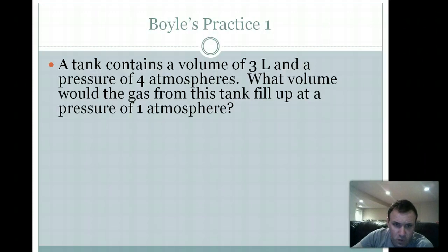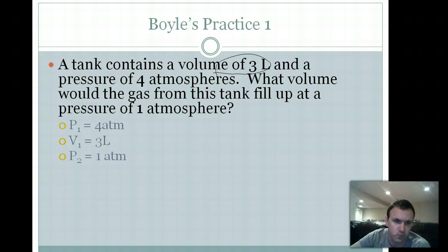All right, our first practice problem. A tank contains a volume of three liters, so volume of three liters. There is our V1. And a pressure, four atmospheres. So we have pressure first. That pressure is four atmospheres. The second volume is three liters. It's asking us, what is the final volume if we lower the pressure to one atmosphere? Now, if pressure, in this case, is going down, we should expect volume, then, to go up, based off of our relationship of it being opposites of each other. So we should expect an answer higher than three liters.